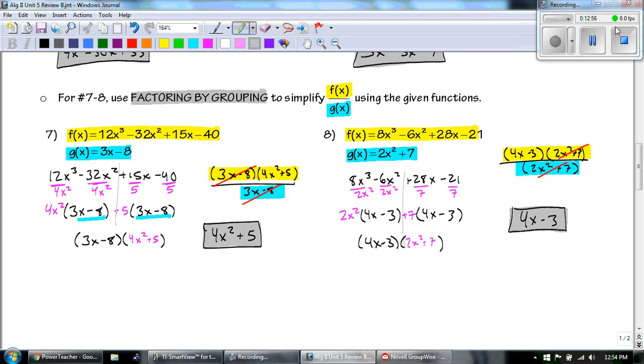But then I got to figure out what the remainder is. 8 divided by 2 is 4 and it's going to be a 4x. Negative 6 divided by 2 is 3. 28 divided by 7 is 4. And 21 divided by 7 is 3. So we get 4x minus 3 and then 2x squared plus 7.